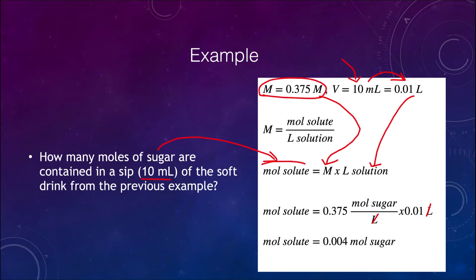Now it's a small number, but remember that each mole is Avogadro's number — 6.022 times 10 to the 23rd molecules — so that is a lot of sugar molecules.